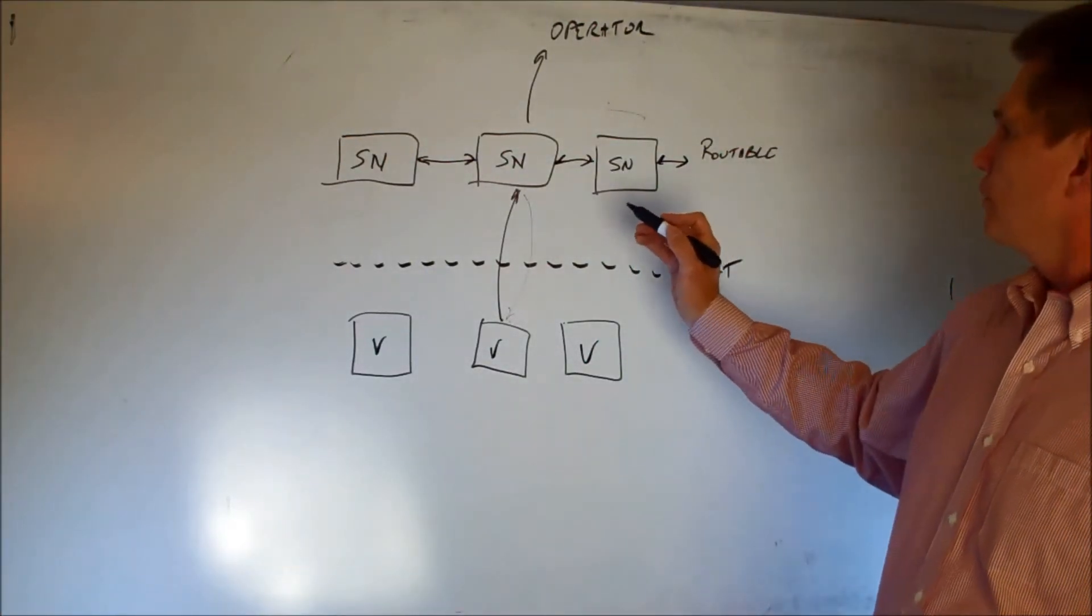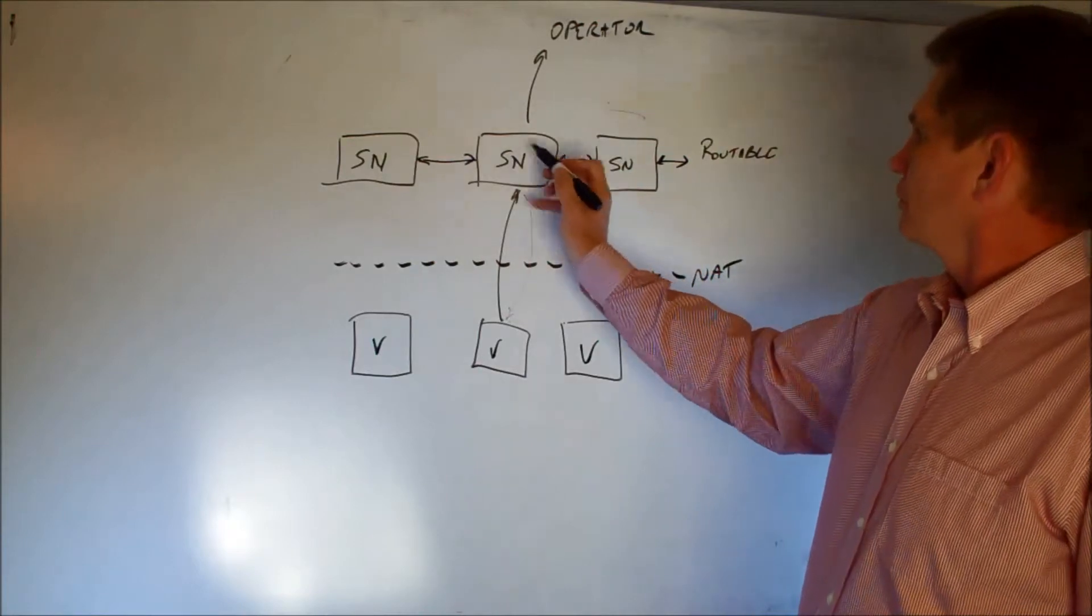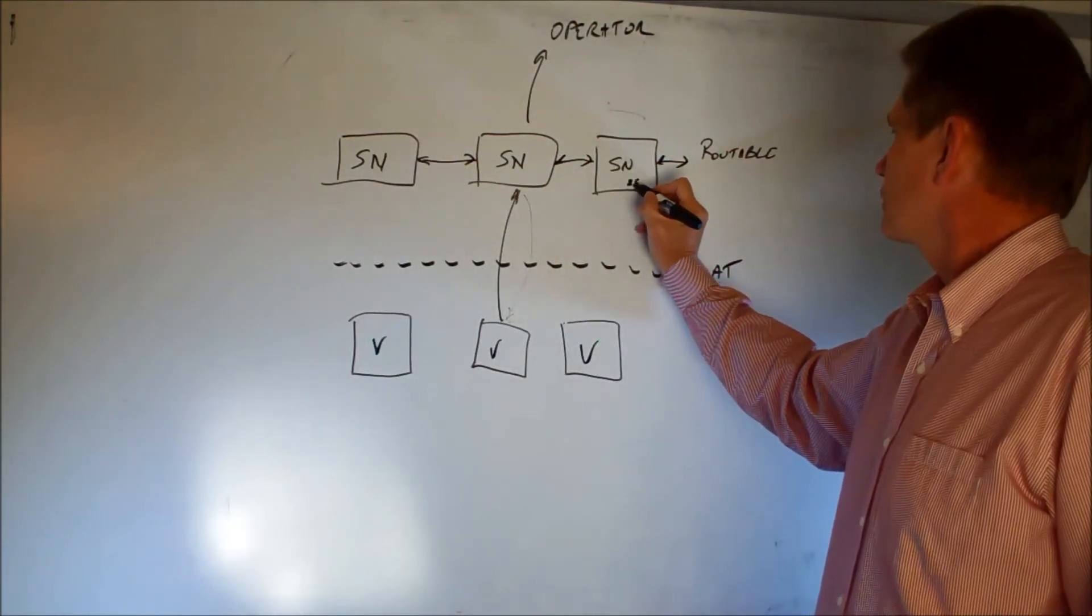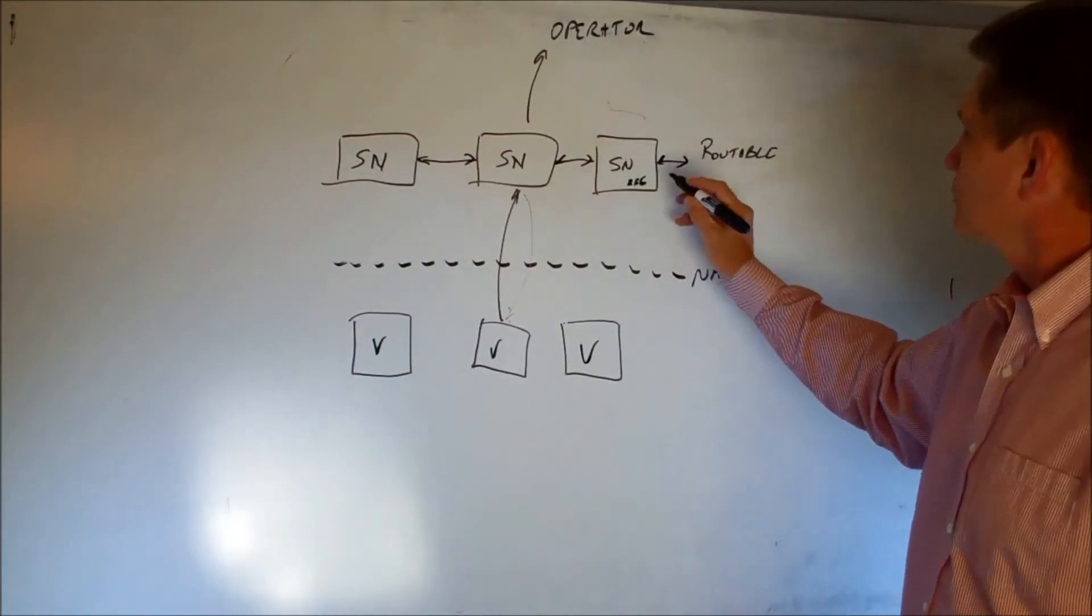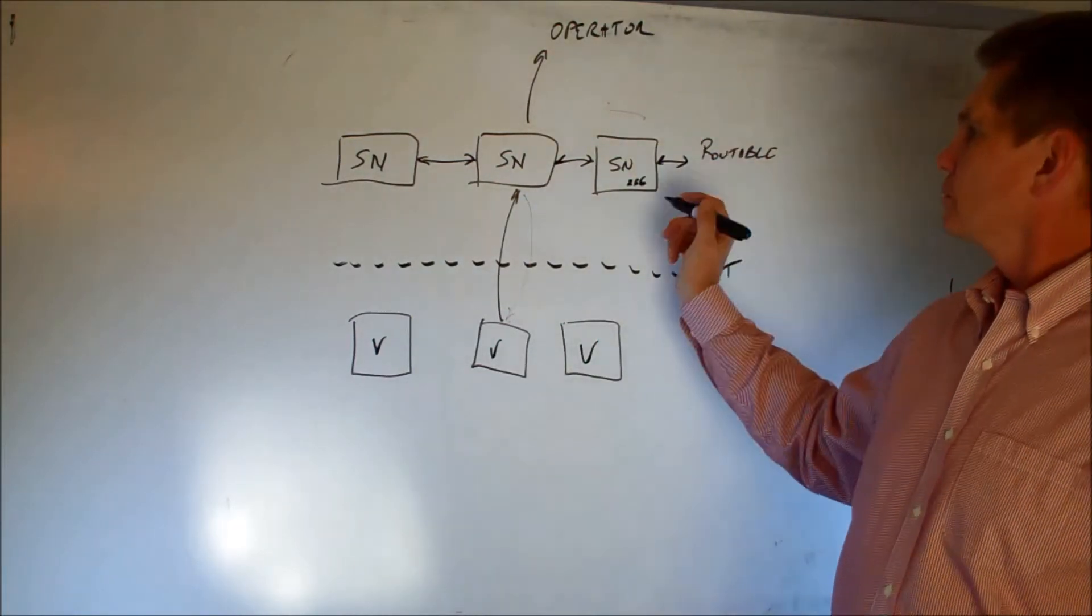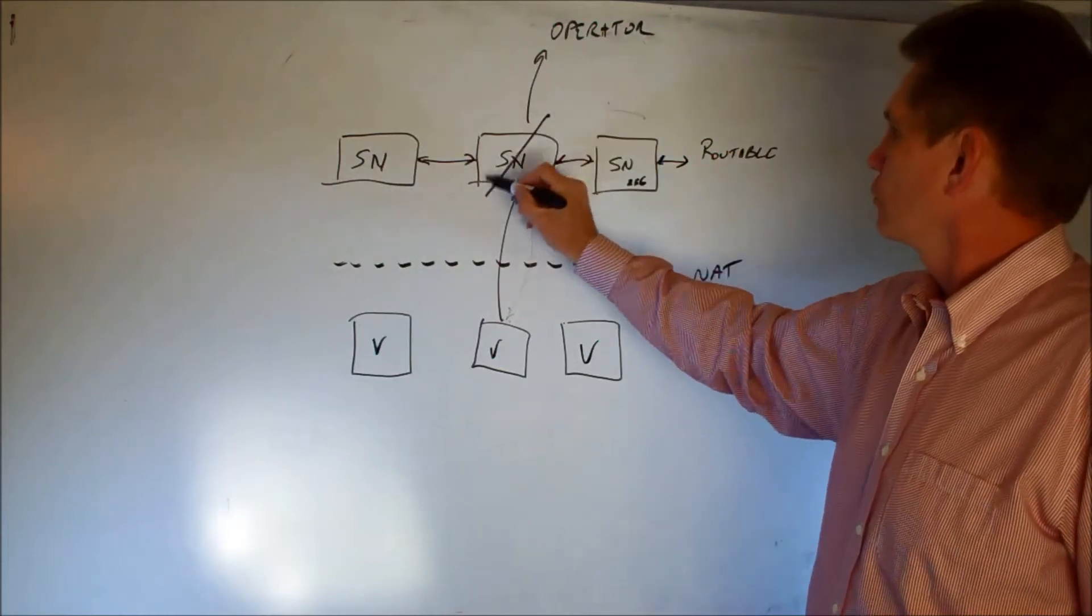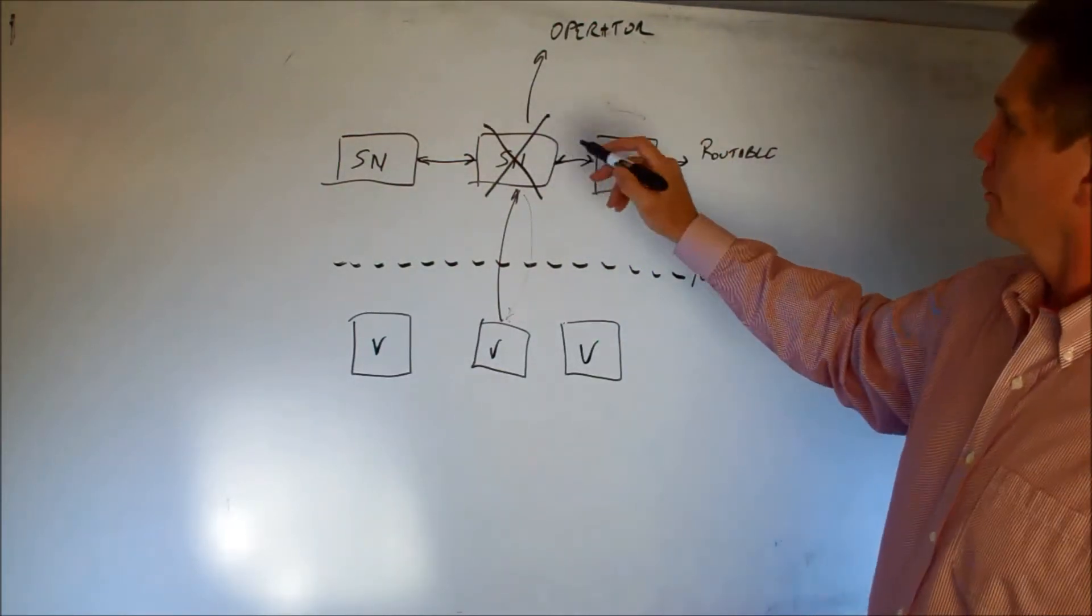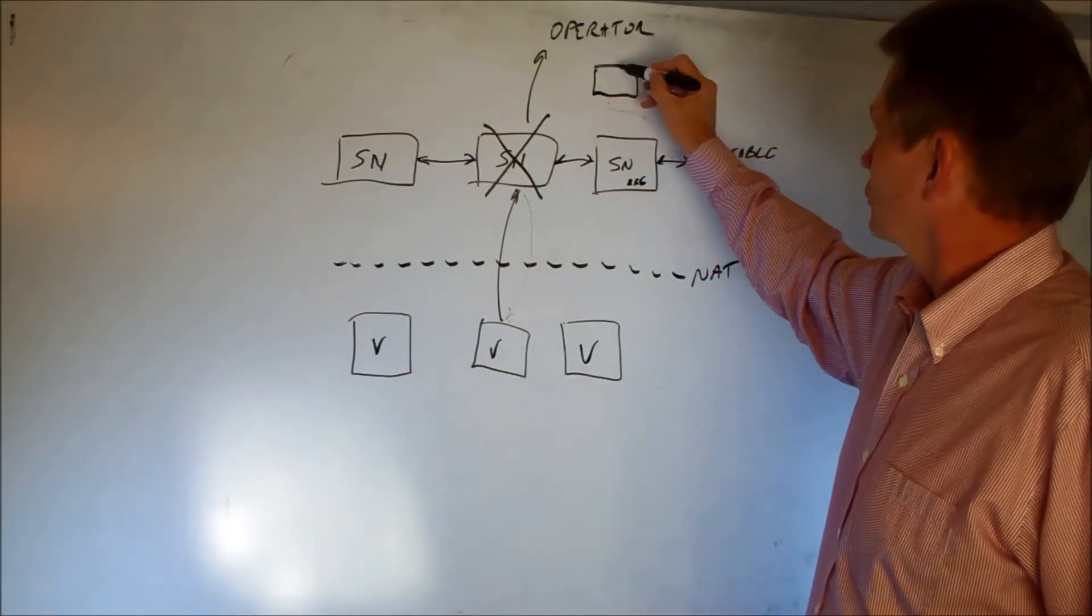So the super nodes, typically this connection between nodes, they maintain a list of 256, in the case of zero access anyway, hosts that it can talk to. So that if a node goes down, the chain is not really broken. It's really not a linear, this is more of a cloud type connection.